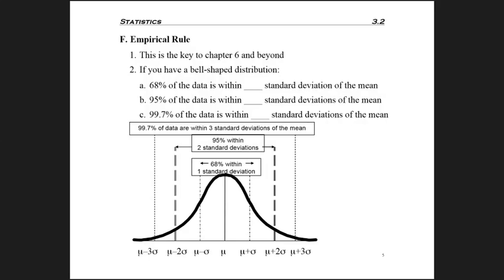And the second measure of standard deviation that's going to come up a lot in the future is something that's called the empirical rule. And it's something that we'll use from Chapter 6 on a whole bunch. But the key here is that you need to have a bell-shaped distribution. And we talked about distributions and shapes back in Chapter 2.